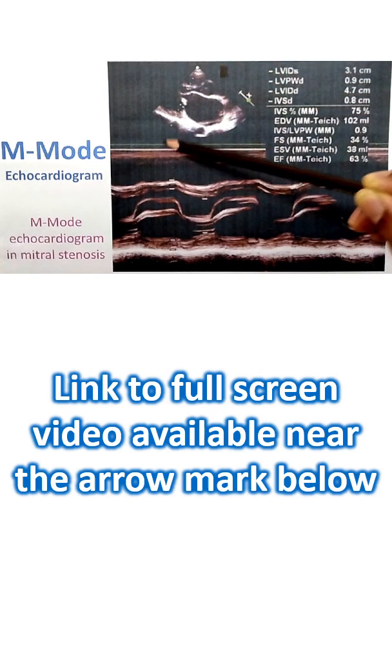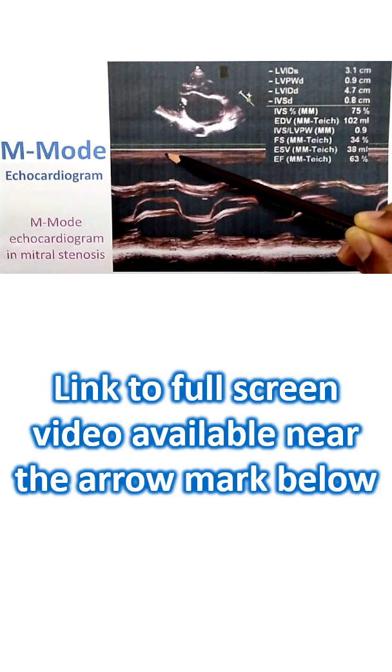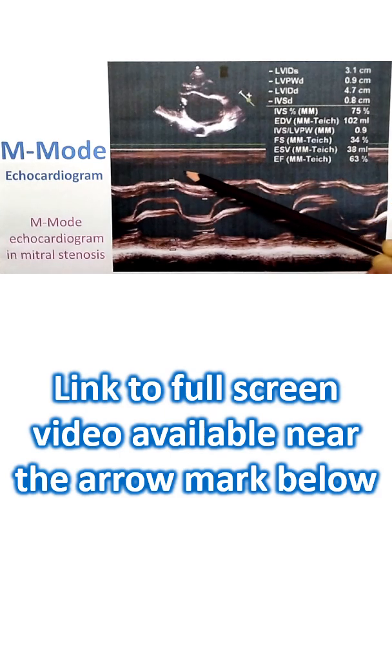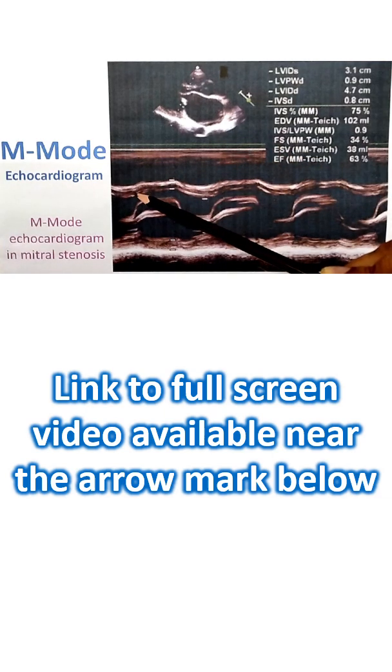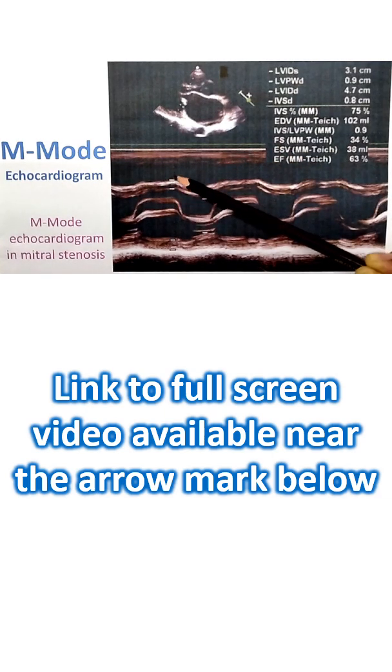This will be the anterior chest wall, free wall of the right ventricle, portion of the right ventricular cavity mostly in the right ventricular outflow region, and this is the interventricular septum. You can see that anterior and posterior parts of the interventricular septum has been marked here; that's for the left ventricular measurements.